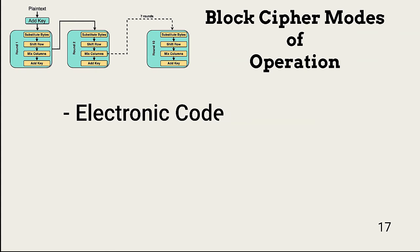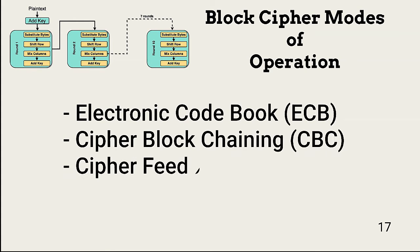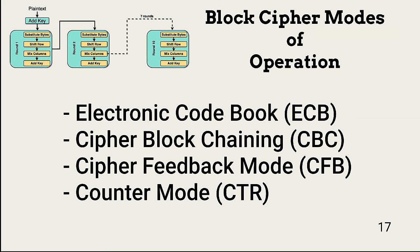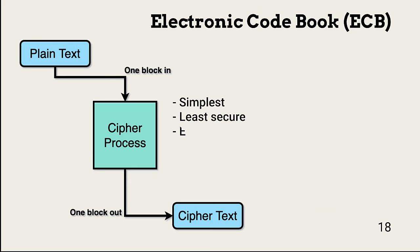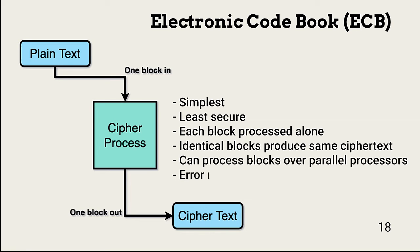There are four basic block cipher modes. Electronic codebook, or ECB, is the simplest mode and it is the least secure. Each block of plain text is processed individually. Because of the way each block is processed, blocks with identical data produce identical cipher text, which reduces entropy. One advantage of ECB is the potential for multiple blocks to be processed across multiple processors, and another is the lack of propagation of input or cipher errors.